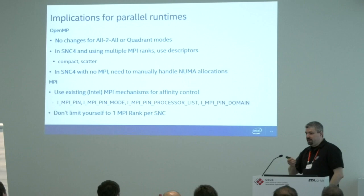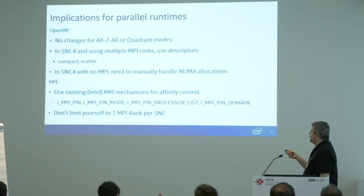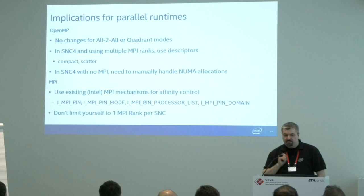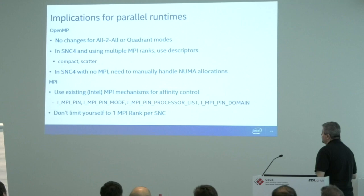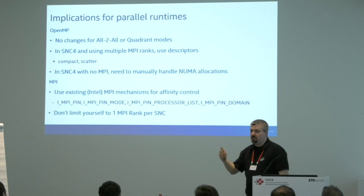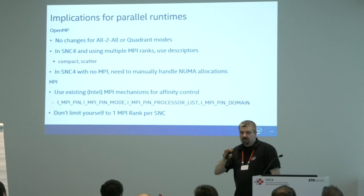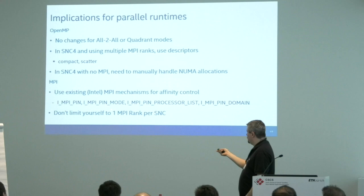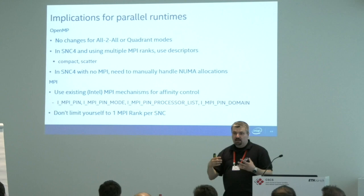Relevant environment variables: I_MPI_PIN, PIN_MODE, PIN_PROCESSOR_LIST, PIN_DOMAIN, and so forth — to control the affinity of MPI ranks and the core set associated with each rank for OpenMP threads. You don't have to limit yourself to one MPI rank per SNC domain; you can have two or four — whatever gives the best balance between OpenMP and MPI communication. The minimum is one MPI rank per sub-NUMA cluster domain.